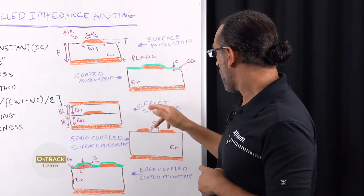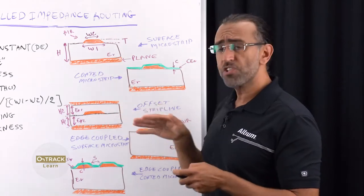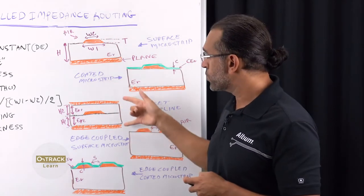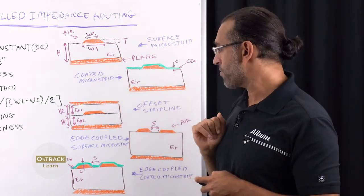And the third one we have here is the offset stripline, which is a single track, but it's sandwiched inside the PCB between two planes and two material constants you'd have to account for.